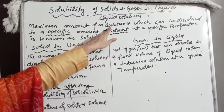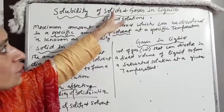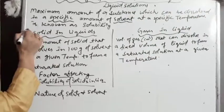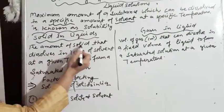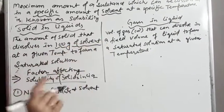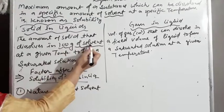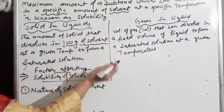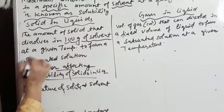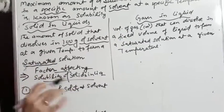The two types of substances are solid and gas — that is the generalized term. For solids in liquid, the amount of solid that dissolves in 100 grams of solvent at a given temperature to form a saturated solution is considered. Note that this resembles the molality concept — we are talking about mass, which doesn't change with temperature. This gives us the concept of a saturated solution, which we will discuss shortly.